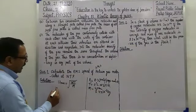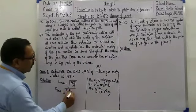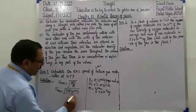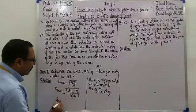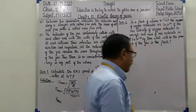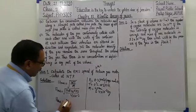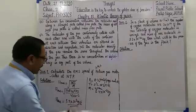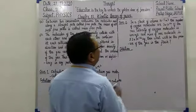تو ہم calculate کریں گے: Vrms = √(3 × 8.3 × 273 / (4 × 10⁻³))۔ جب اس value کو calculate کریں گے، تو Vrms = 1.3 × 10³ meter per second آتی ہے۔ یہ ہماری root mean square velocity calculate ہوئی۔